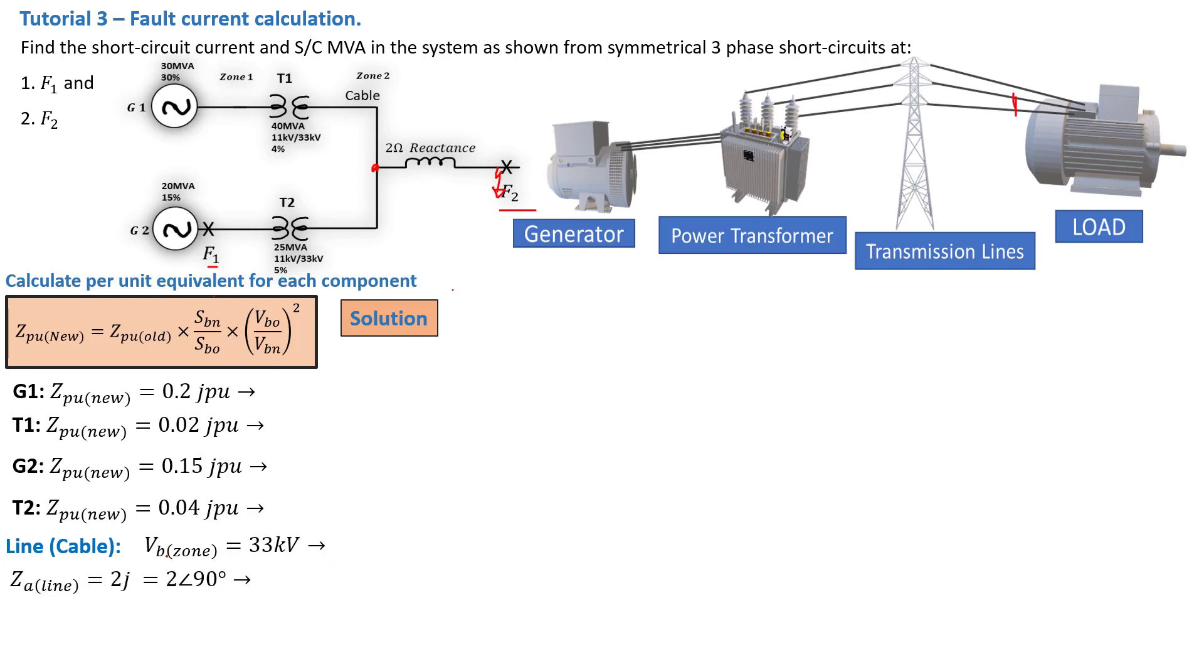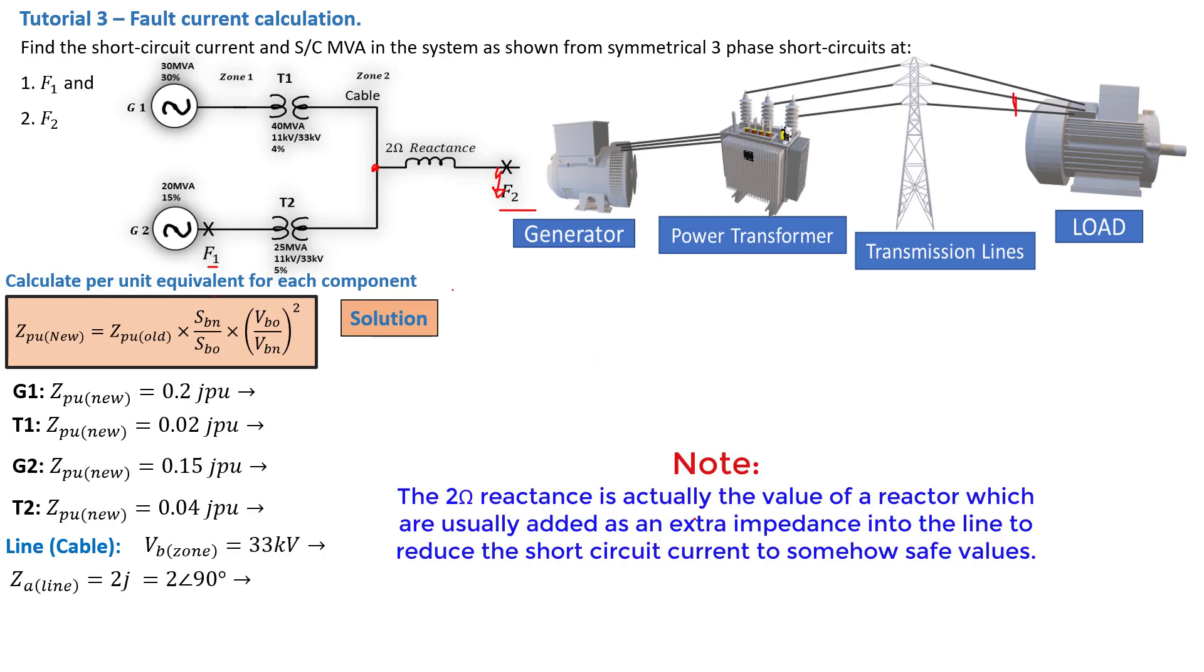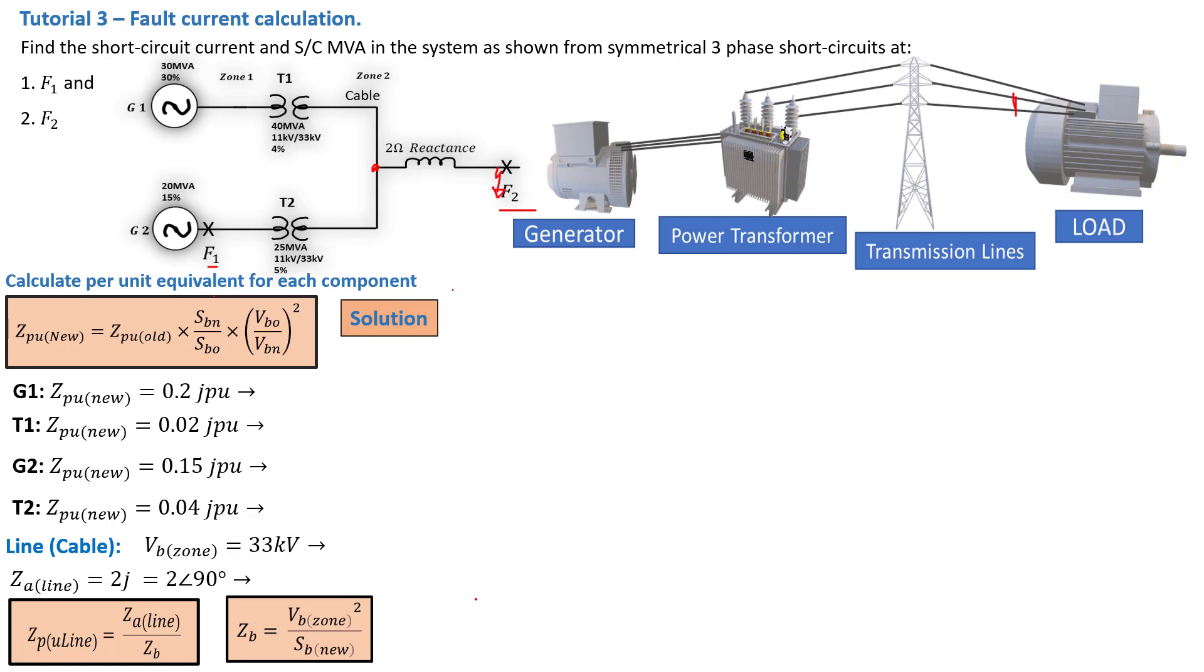The Z actual is equal to 2J, that's a 2 ohm reactance, and that is equal to 2 with an angle of 90 degrees because it's a purely inductive cable. From there we need to deduce from the two main formulas that I use to calculate the Z per unit of the line. So Z per unit of the line is given by Z actual divided by ZB. The second formula is ZB, and ZB is given by the VB zone squared divided by SB new. And again, SB new could be anything that you have chosen to calculate all these per unit values.